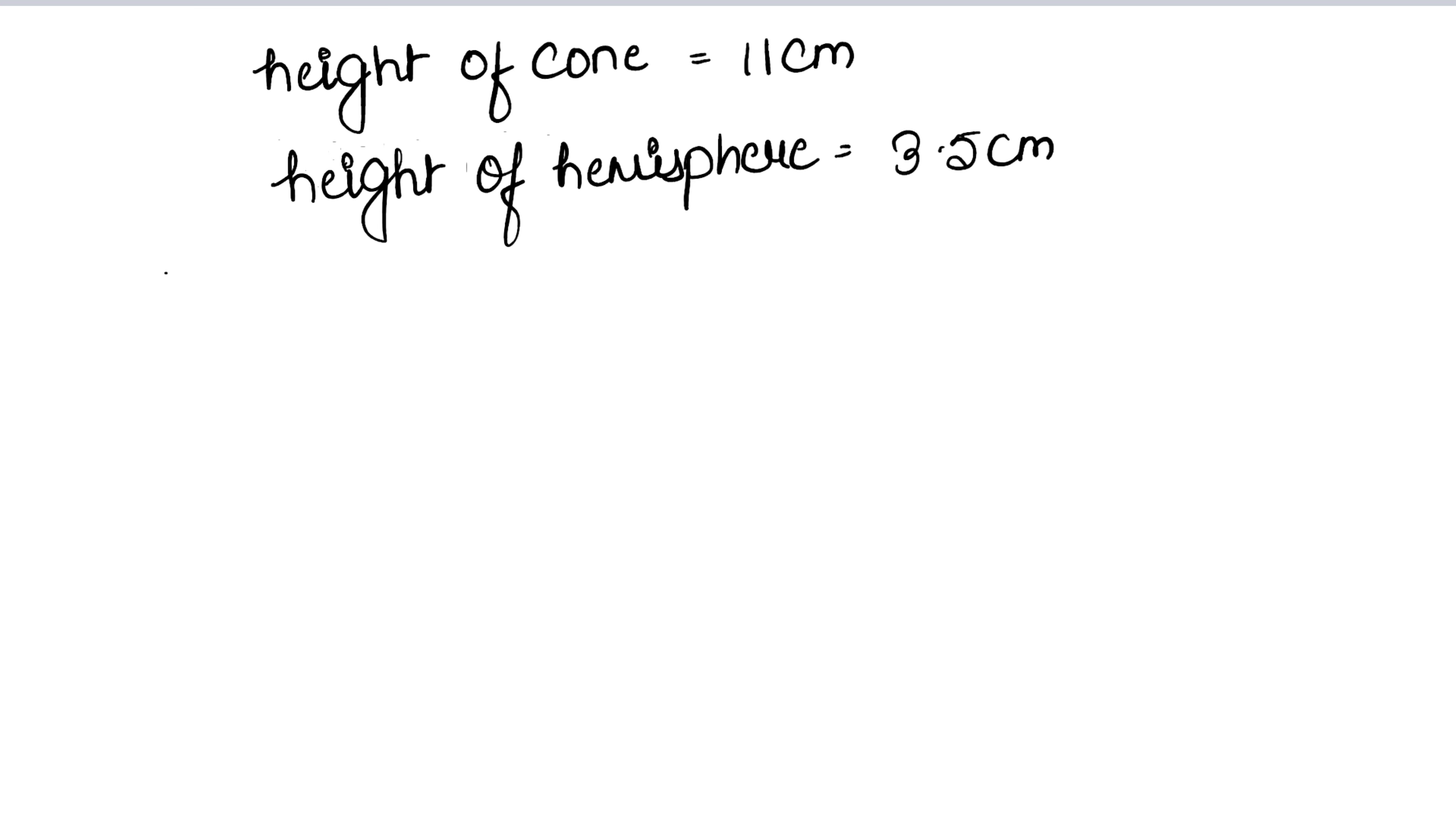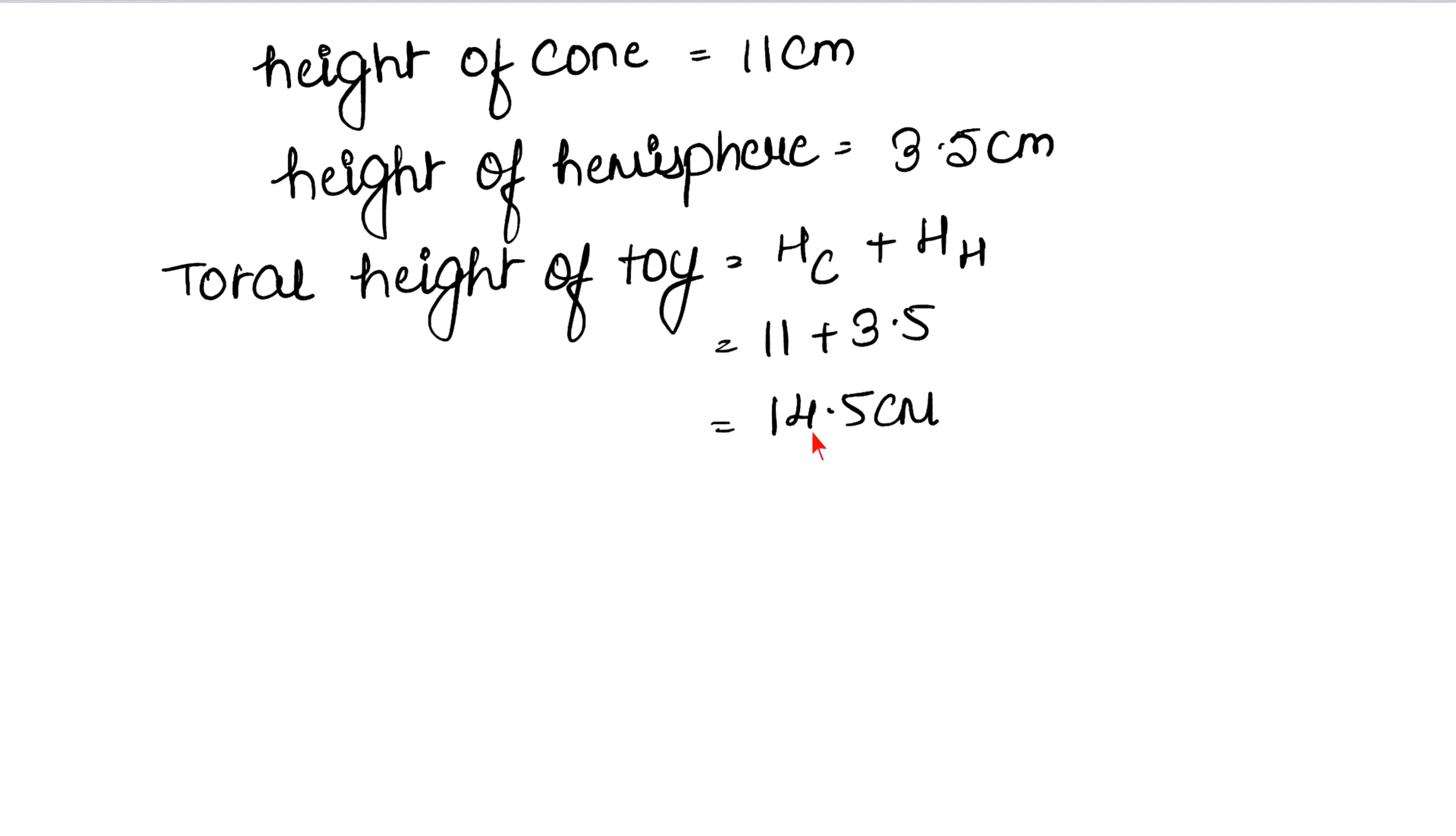So toy's total height. Total height of toy is height of cone plus height of hemisphere, so that is 11 plus 3.5, so that is 14.5 centimeter.